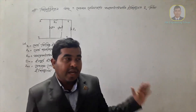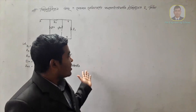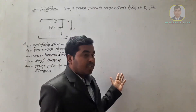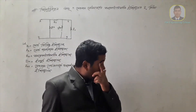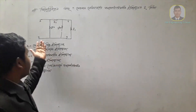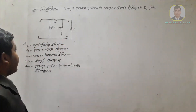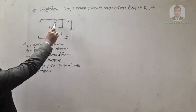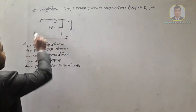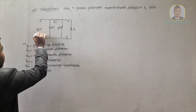We have a symmetrical T-network. In this last step, we have a symmetrical pi-network. This is symmetrical, and the pi-network has Z0, 2Z2, 2Z2, Z0, and Z1.